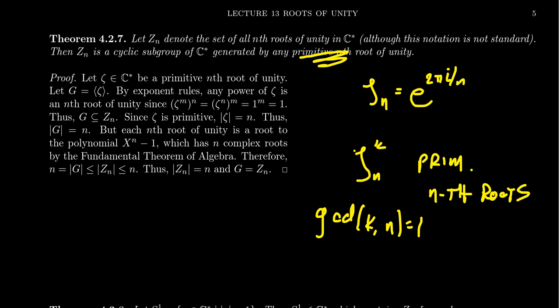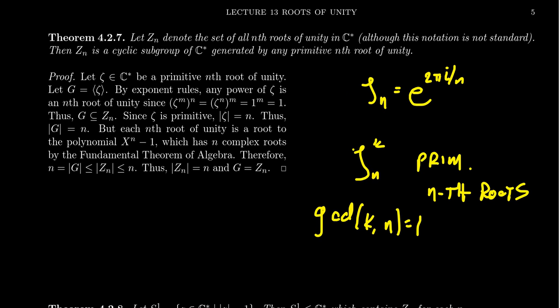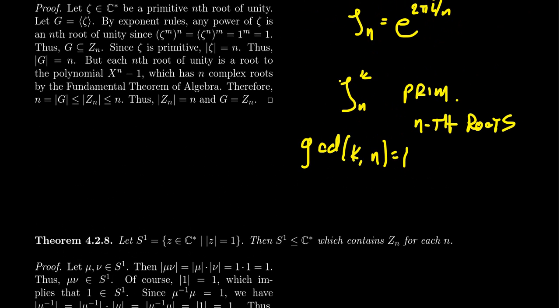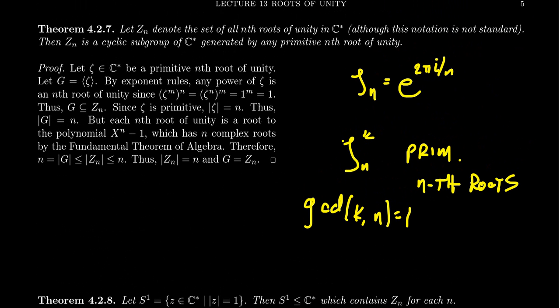The generators of a cyclic group are those elements whose order equals the order of the group — we're looking for elements whose multiplicative order is n, and that's exactly what the primitive roots are: no smaller power achieves 1. For every n, you get a cyclic group of order n inside C star, and these are all distinct — if you choose different n, you get different cyclic groups. So this gives an infinite family of cyclic subgroups inside C star.